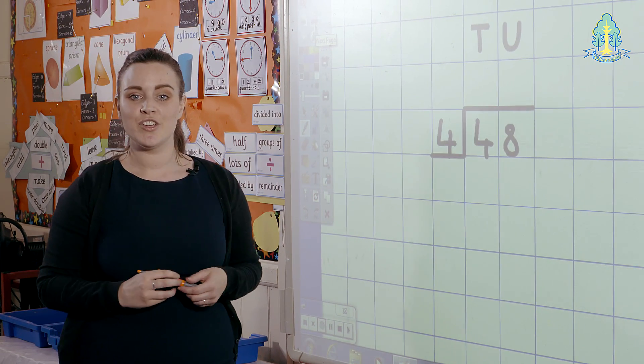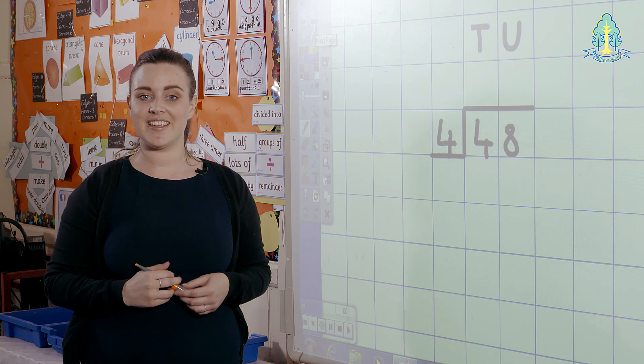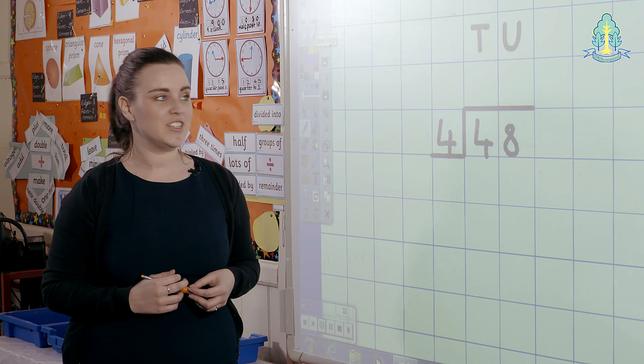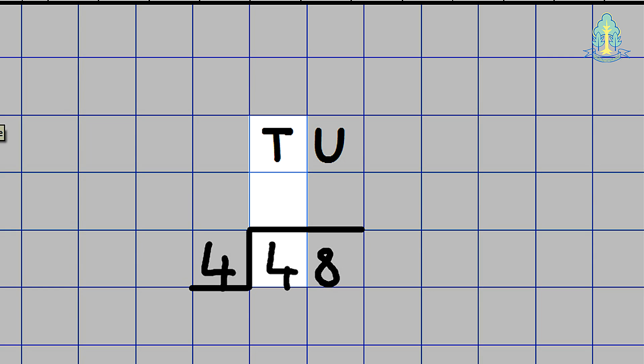In this example children are told that they can take the calculation on by dividing one digit at a time. Again we have a tens and units column. We have 4 tens which of course is 40 and we have 8 units. We would say how many 4's in 4, or 4 divided by 4 is. The children would complete their answer above the line and in the correct column which is the tens column.